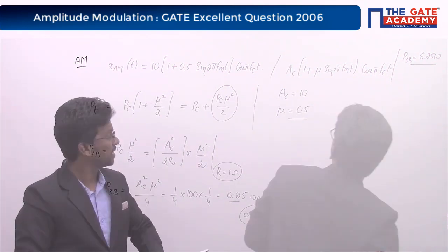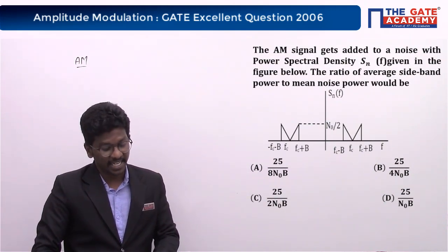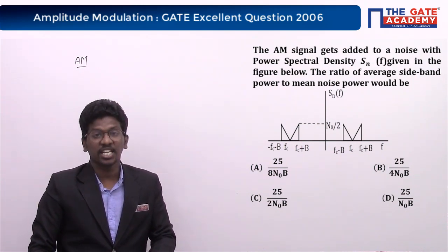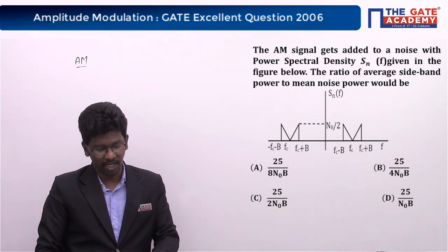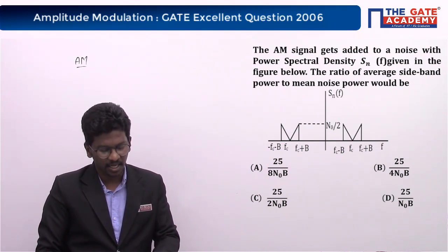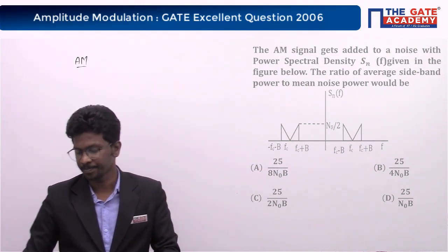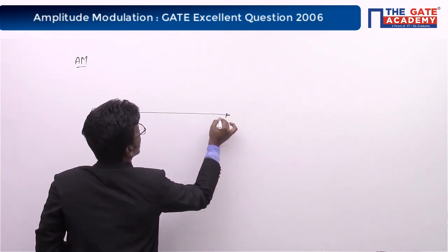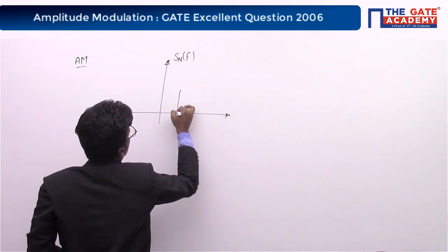Now let us see the second question. The AM signal gets added to noise with a power spectral density given in a figure. The question asks for the ratio of average sideband power to mean noise power. The options are: A: 25/(8N₀B), B: 25/(4N₀B), C: 25/(2N₀B), D: 25/(N₀B). The noise has a power spectral density as shown in the figure.